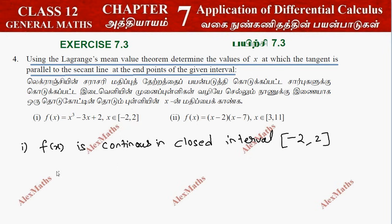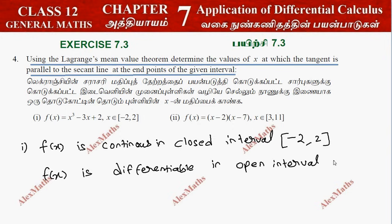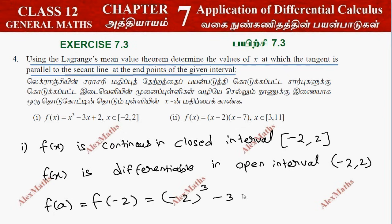f(x) is differentiable in the open interval (-2, 2). Now substituting the first value of the interval: f(a) = f(-2) = (-2)³ - 3×(-2) + 2 = -8 + 6 + 2 = 0.